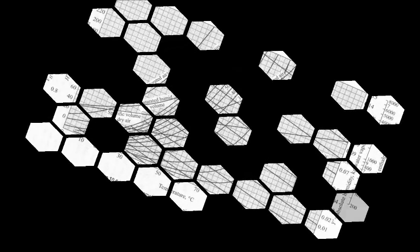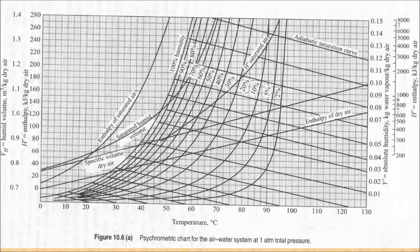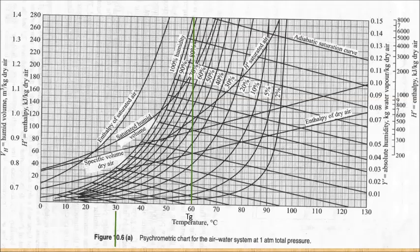From the given data, firstly extend a line vertically from 60 degrees Celsius, which represents the dry bulb temperature. Then draw another line upwards for the wet bulb temperature at 30 degrees Celsius until it touches the 100% humidity line. As the wet bulb temperature is equal to the adiabatic saturation temperature in a water-air system, the line can then be extended diagonally and parallel to the adiabatic saturation curve until it intersects with the dry bulb line.